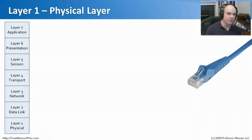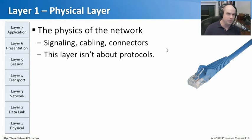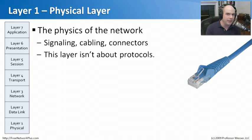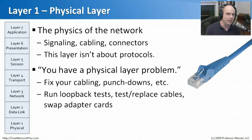Let's start with the first layer. Down at the bottom we have the physical layer. The physical layer of the OSI model deals with exactly what you might expect from the name — it's the physics of the network. This is everything that happens at a physical wire level, the part of the OSI model we can actually touch. Everything at this layer deals with signaling, cabling, connectors, and being able to get the signal from one end of the network to the other.